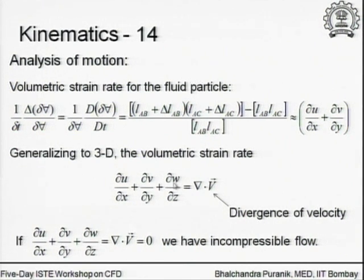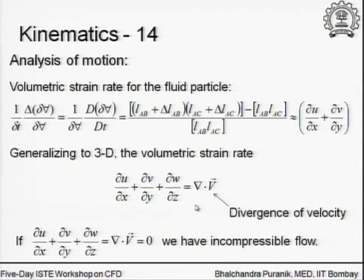Generalizing to 3D, we simply add the z-derivative of the z-velocity. This sum is the divergence of the velocity field, written as del-dot-v, which equals du/dx plus dv/dy plus dw/dz. If the volumetric strain rate equals zero, we call that an incompressible flow. The condition for incompressible flow is del-dot-v equal to zero — the fluid particle undergoes no volumetric strain rate as it moves.